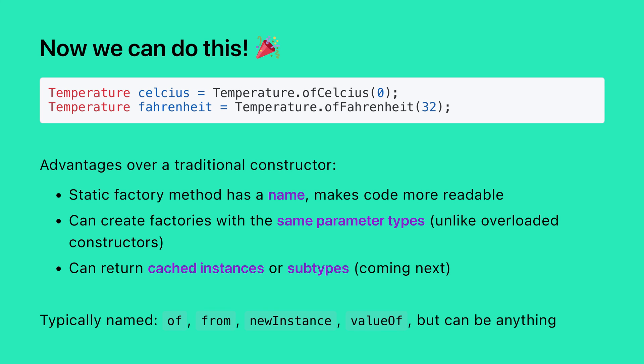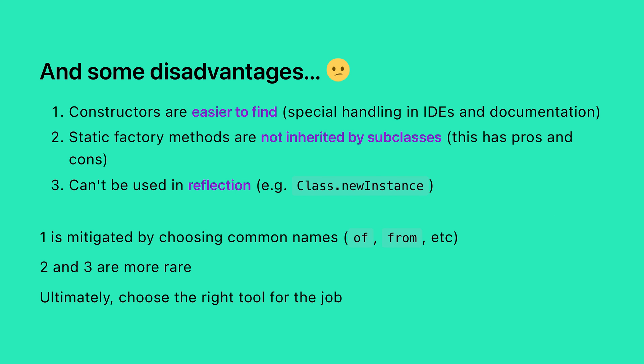This has several advantages over a traditional constructor. Firstly, it has a name, which makes code more readable by providing inbuilt documentation. Secondly, we can create factories with the same parameter types, which we couldn't do with overloaded constructors. And we can also return cached instances or subtypes. There are some disadvantages, though. Constructors are easier to find because they have special handling in IDEs and documentation.